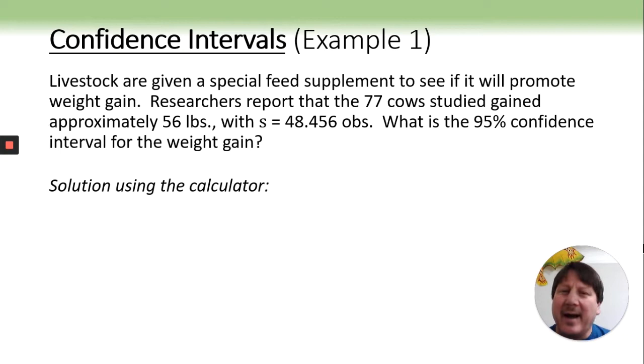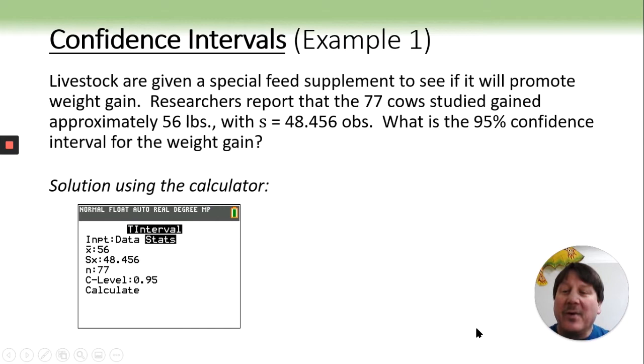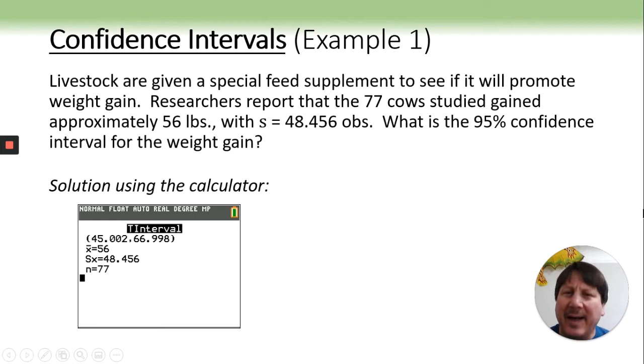Using it on the calculator, which is probably how most of us are going to do it, you are going to go to test. You should notice that tests are always first. You have to get all the way through the tests before you get to the intervals. There is a Z interval if you happen to know the standard deviation, but we'll go to number eight, the T interval. We do not have the data, we have the stats because they gave us the stats. So I will enter that including the sample size, and then choose the confidence level, the 95%, and just like that, you get your confidence interval.